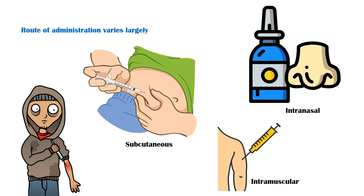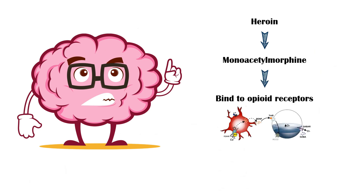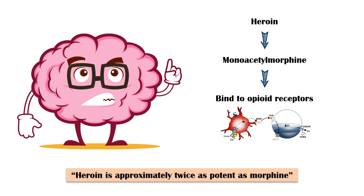Following administration, heroin gets metabolized in the central nervous system to monoacetylmorphine, which acts as an agonist for the opioid receptors in the brain. Heroin is approximately twice as potent as morphine.